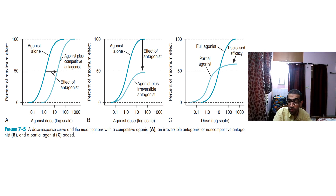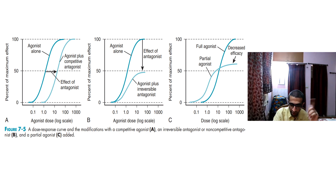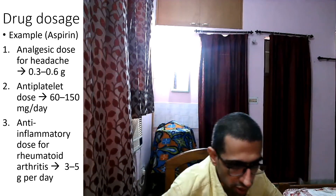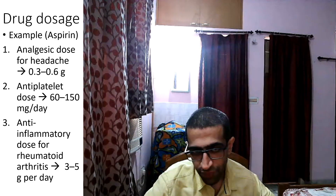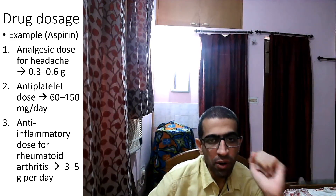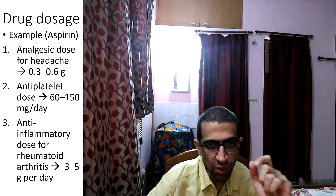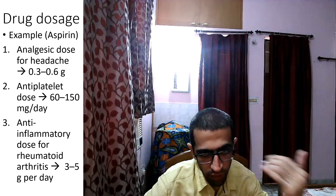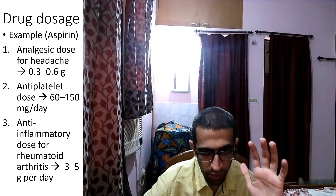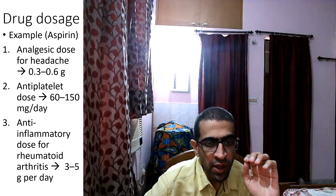A partial agonist produces a submaximal response even at high doses — please review the earlier content for clarification. Now moving on to drug dosage: a dose is the appropriate amount of drug needed to produce a certain degree of response in a given patient.